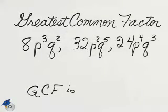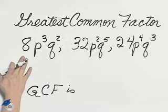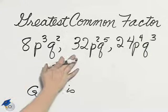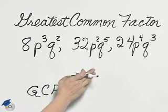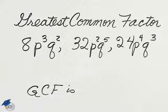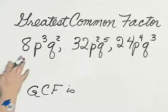To find the greatest common factor of the three terms 8p cubed q squared, 32p squared q to the fifth, 24p to the fourth q to the third, consider the largest factor of the coefficients.